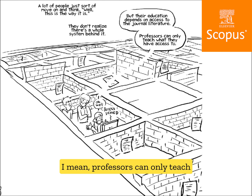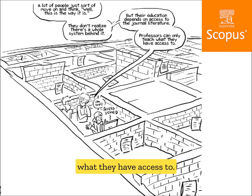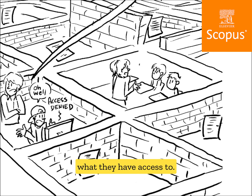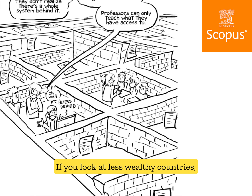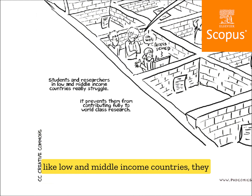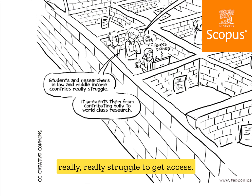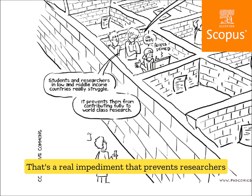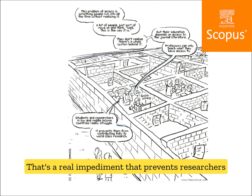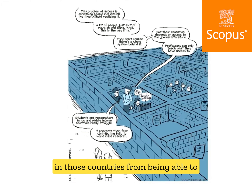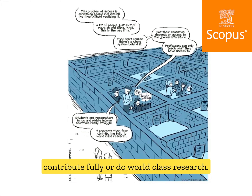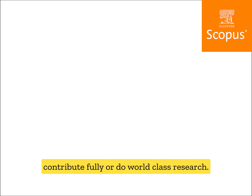Students' educations literally depend on access to the journal literature — professors can only teach what they have access to. If you look at less wealthy countries, low and middle income countries really struggle to get access, and that's a real impediment that prevents researchers in those countries from being able to contribute fully or do world-class research.